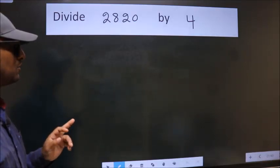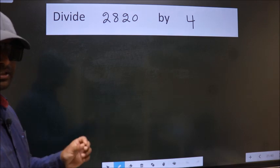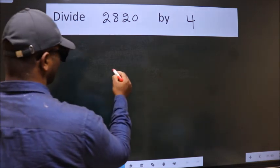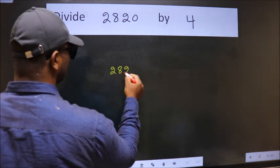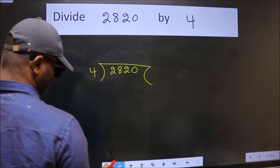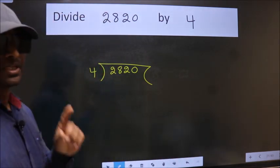Divide 2820 by 4. To do this division, we should frame it in this way: 2820 here, 4 here. This is your step 1.